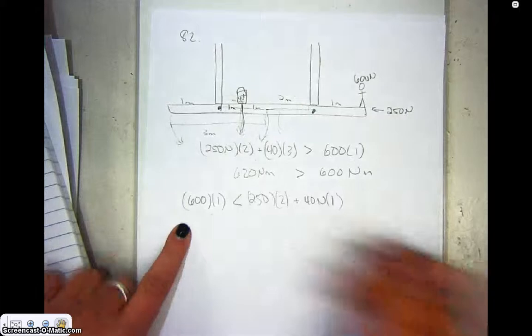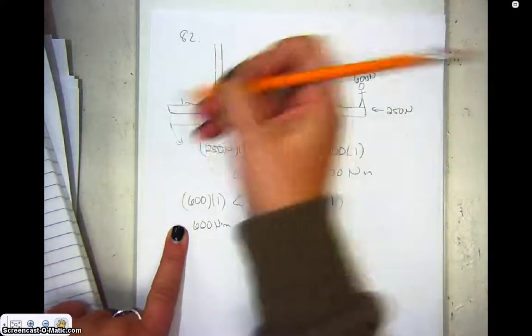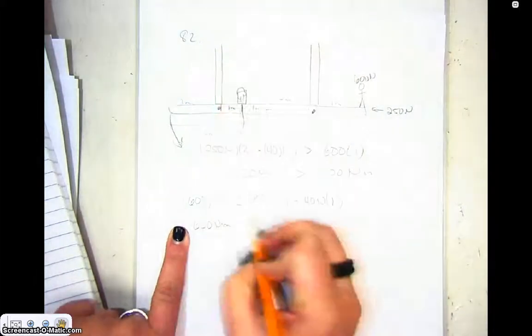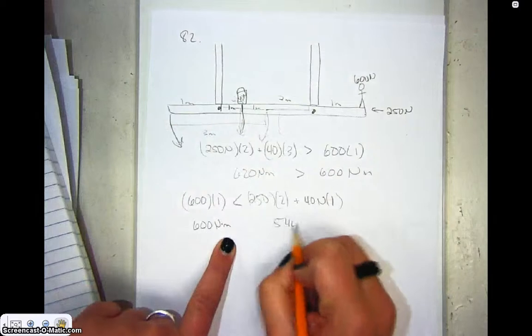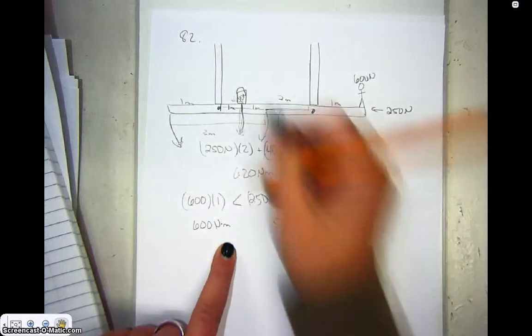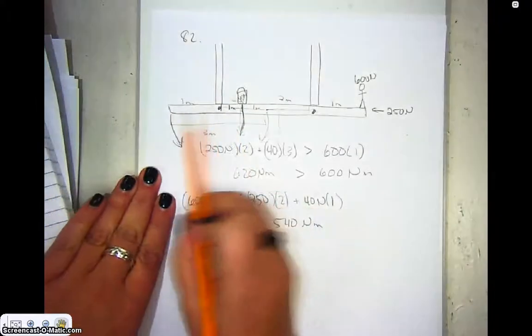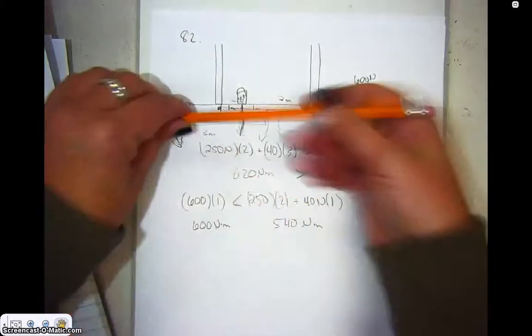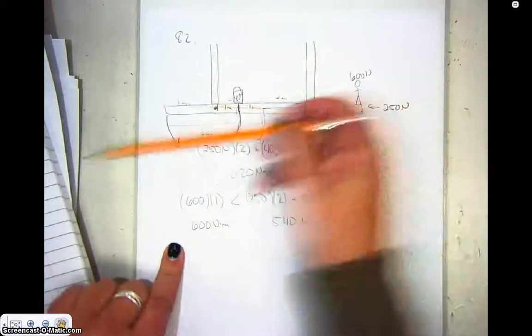So in this case, we've got 600 newton meters making it tip this direction, and we've only got 540 newton meters making it tip this direction. So he can't walk all the way out there, otherwise it's going to tip like this and he's going to fall down.